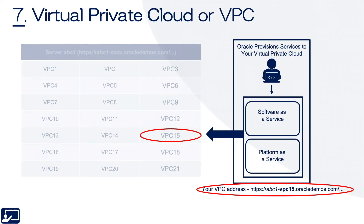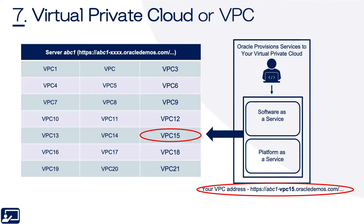Let's go to our last topic: virtual private cloud, or VPC. Think of it like VMware — you take a box and cut it up into different slices: VPC one, VPC two, VPC three, VPC four. Each of these VPCs is kind of its own computer within a computer — a virtual computer, if you will.